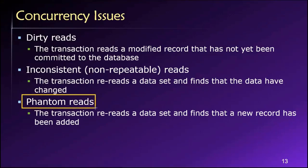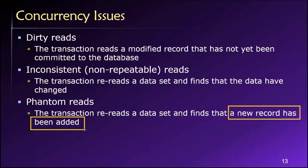Then we have a phantom read. A phantom read is somewhat similar to an inconsistent read, but it manifests when a transaction rereads a data set and finds that a new record has been added. In a sales scenario, it would be like an additional sale being added while we were still busy processing our sales transaction. The calculations made as part of our transaction — the changes we were going to make — would no longer be accurate.